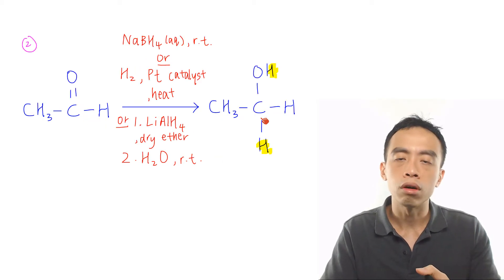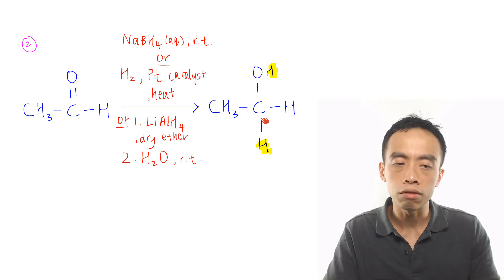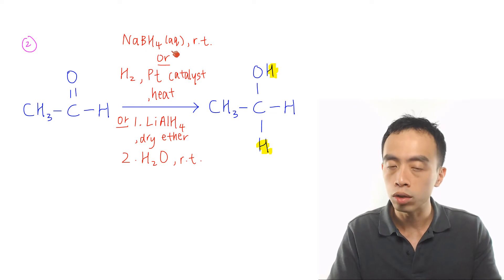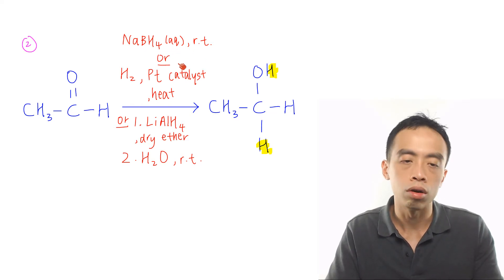Second must-know reaction of aldehyde would be the reduction of aldehydes to form primary alcohols. Now this is done using NaBH4 aqueous at room temperature or hydrogen in a platinum catalyst heat or we can also use lithium aluminum hydride in dry ether followed by water at room temperature.